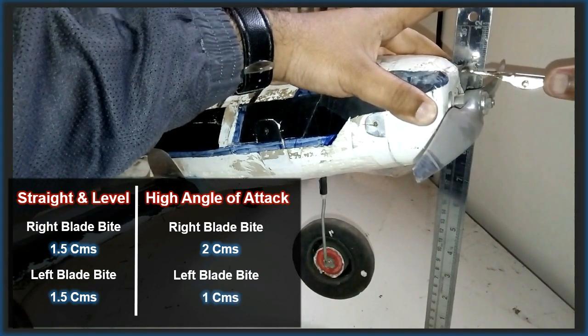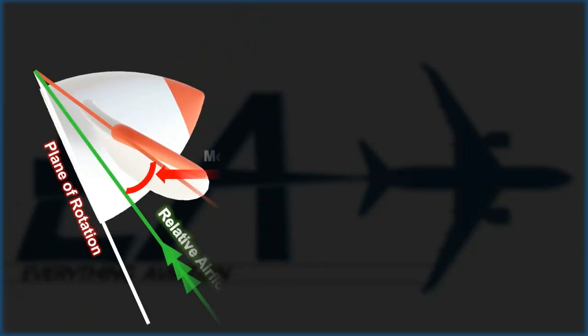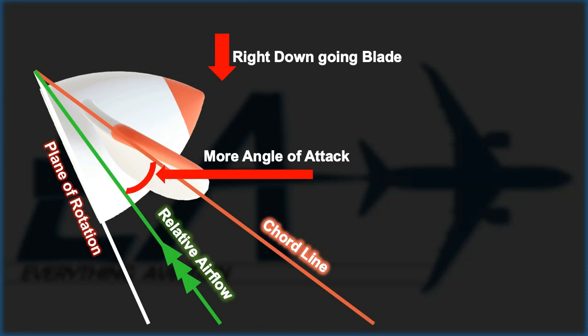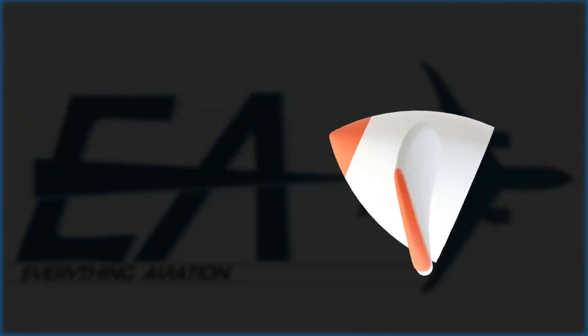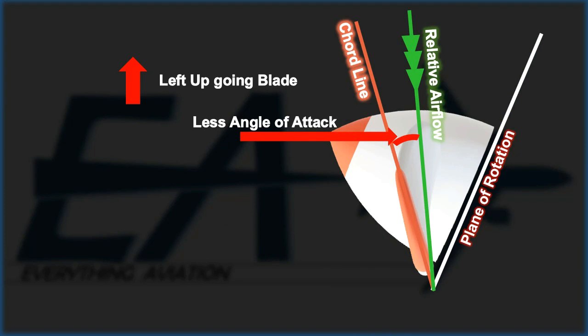You just have to put simple logic in it. When the right blade goes down while climbing or during high angle of attack with high power, the thrust produced by the right blade is more — more air is propelled by the right blade and the angle of attack of the right blade is greater. And when the left blade comes up, the thrust produced is less, as less air is propelled by the left blade and the angle of attack of the left blade is less.